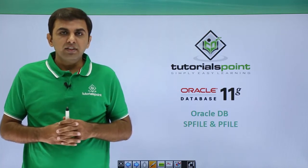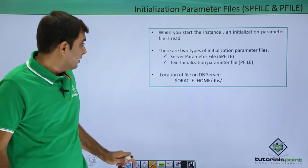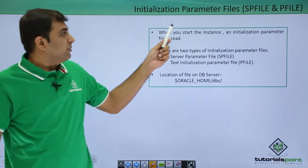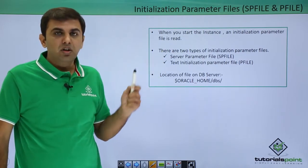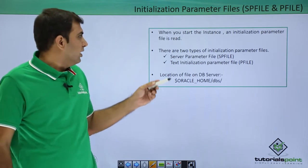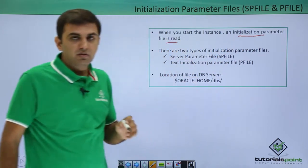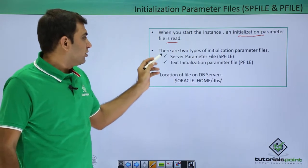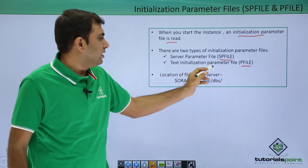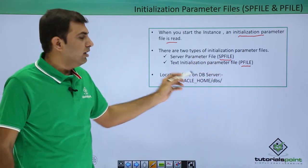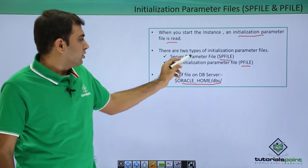Hello friends. In this session we are going to discuss about Oracle database spfile and pfile. What is the initialization parameter file spfile and pfile? In Oracle there are two kinds of initialization parameter file: one is the spfile and the second one is the pfile. When you start the Oracle database instance, the initialization parameter file is read first. The location of the file on the server is oracle home dbs, where both files are available.